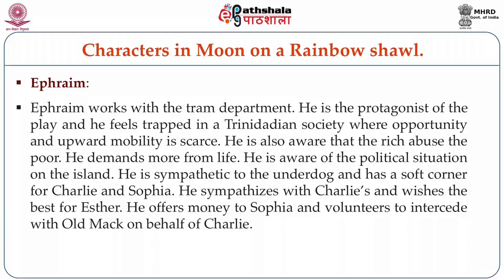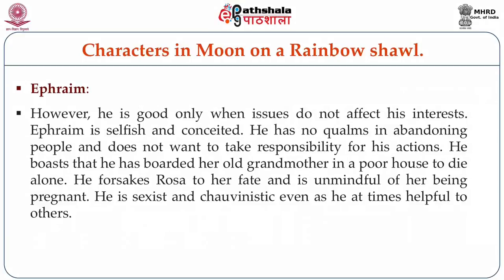Let's look at the major characters in Moon on a Rainbow Shawl. Ephraim works with the tram department. He is the protagonist of the play and feels trapped in a Trinidadian society where opportunity and upward mobility are scarce. He is aware that the rich abuse the poor and demands more from life. He is sympathetic to the underdog and has a soft corner for Charlie and Sophia. He offers money to Sophia and volunteers to intercede with Old Mac on behalf of Charlie. However, he is good only when issues do not affect his own interests. He is selfish and conceited, has no qualms in abandoning people, and does not want to take responsibility for his actions. He boasts of having boarded his old grandmother in a poor house to die alone. He forsakes Rosa to her fate and is unmindful of her being pregnant. He is sexist and chauvinist even at times when he is helpful to others.